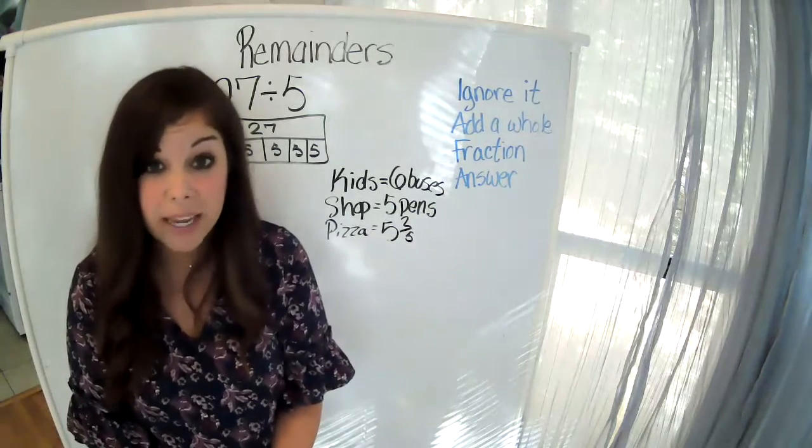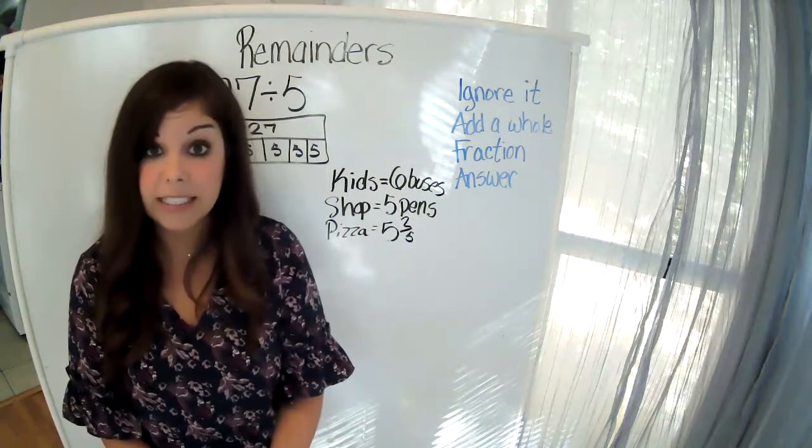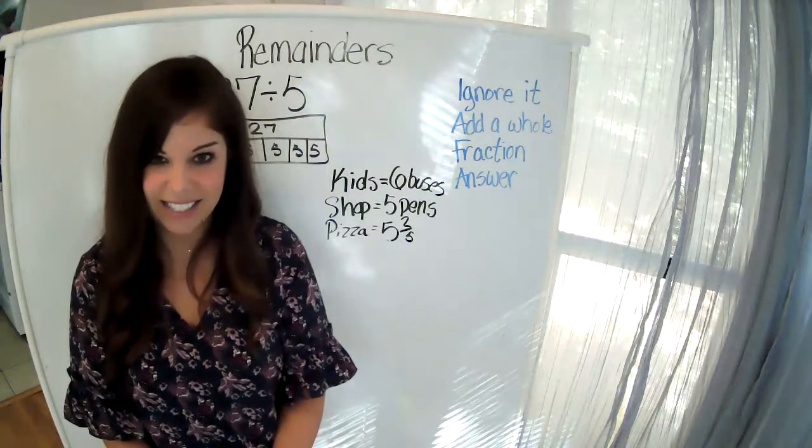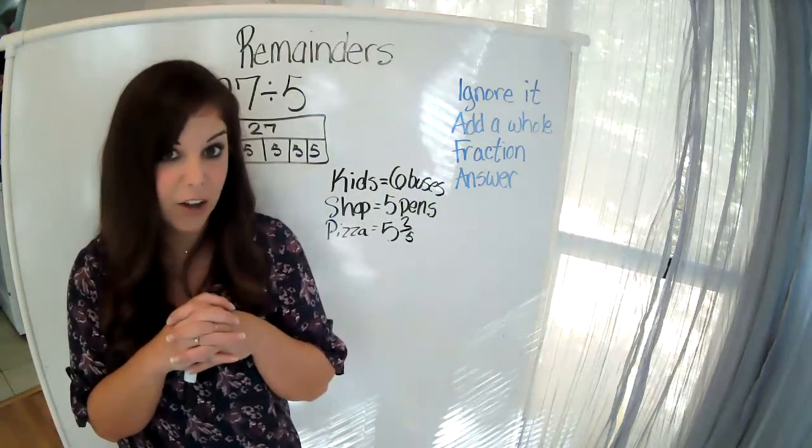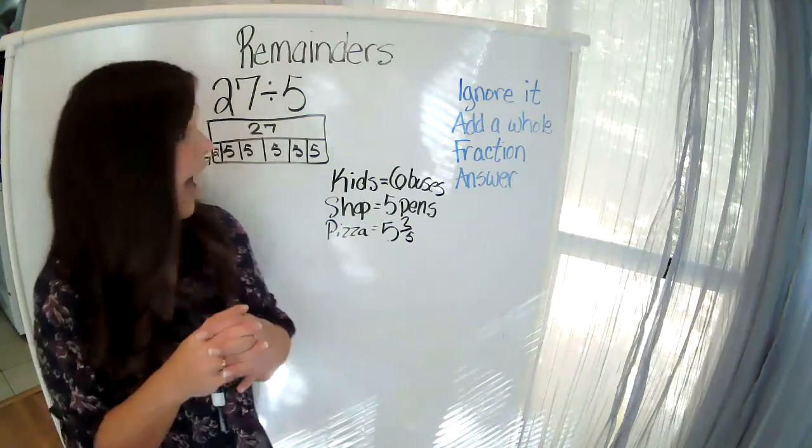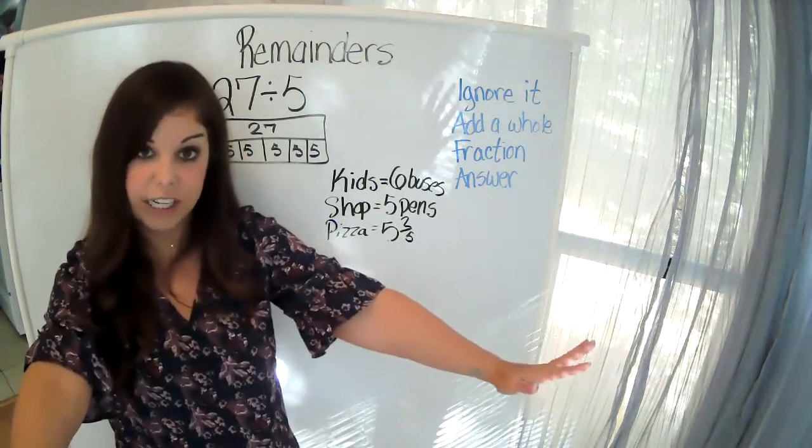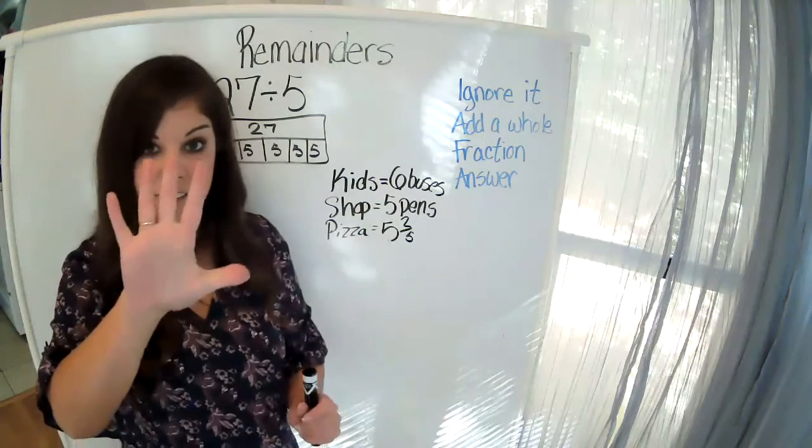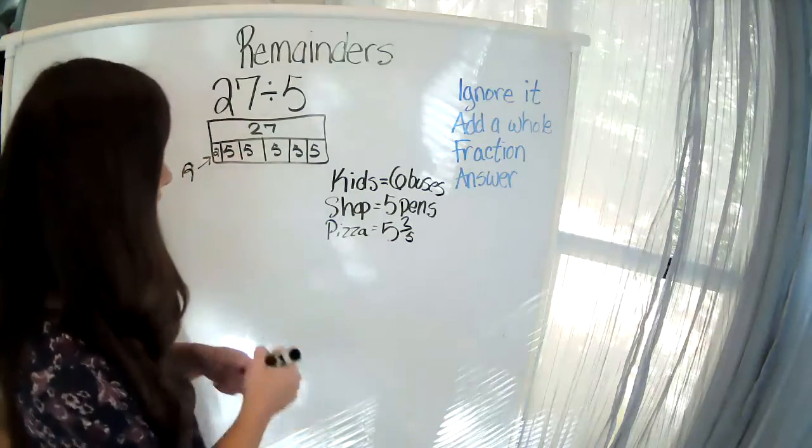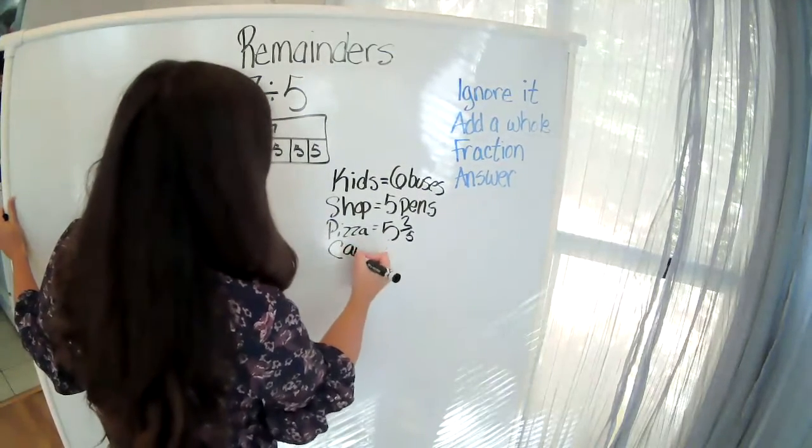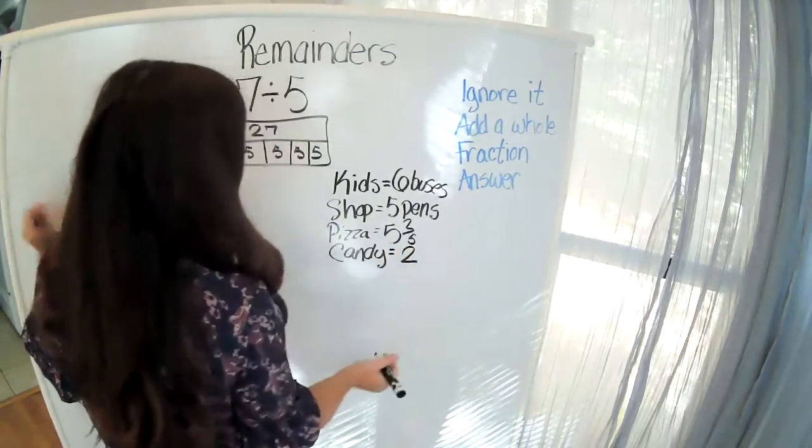Now, sometimes, your remainder is actually your answer. Like in this story problem. If I had 27 pieces of candy, and I decide that I'm going to give it away, but I'm going to keep the leftovers for myself, and I want to know how much I'm going to get. If I had 27 pieces of candy, and I am giving it to 5 of my friends to share equally, I will give each friend 5 pieces of candy. And then, I will have 2 pieces of candy left over for me. So, in the candy problem, my answer was my remainder: 2 pieces of candy for me.